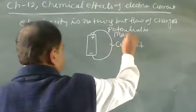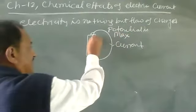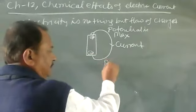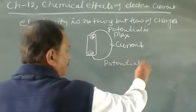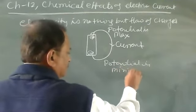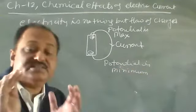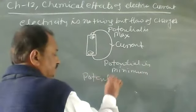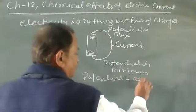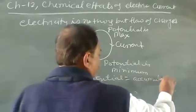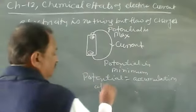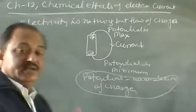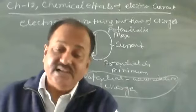At the positive electrode, potential is maximum, and at the negative electrode, potential is minimum. Potential means accumulation of charge — where charges are collected together, that is called potential.